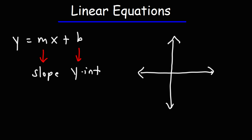Let's say we have this graph. This is the x-axis and this is the y-axis. Now let's say we have a line that looks like this. The point that touches the x-axis is going to be the x-intercept. The y-intercept is the point, or the y-value, at which the graph touches the y-axis.